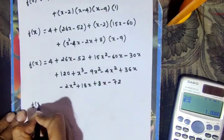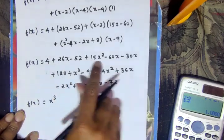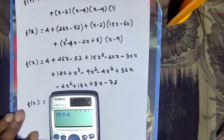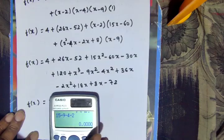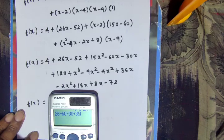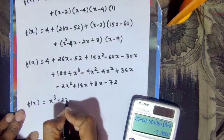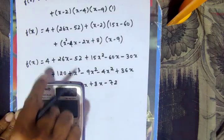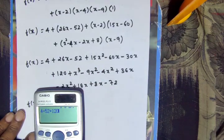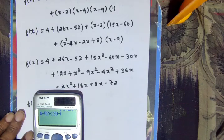Collecting terms by degree: for x³, coefficient is 1. For x²: 15 minus 9 minus 4 minus 2 = 0. For x: 26 minus 60 plus 36 plus 18 plus 8 minus 2 = 26 (collecting all x terms). Constant: 4 minus 52 plus 120 minus 72. Therefore f(x) = x³ - 2x.